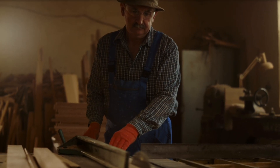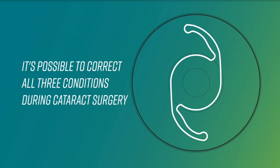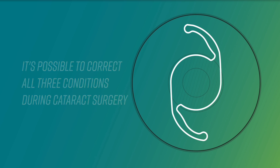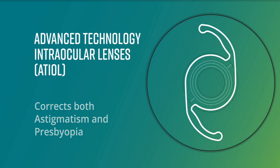When you have all three conditions, you will have vision that is cloudy, blurry, and unfocused up close. But advances in technology have enabled the creation of lenses that correct cataracts, astigmatism, and presbyopia in a single procedure. These lenses are commonly referred to as advanced technology intraocular lenses, and they are specially designed to address these concerns and can help reduce your dependency on glasses after surgery.